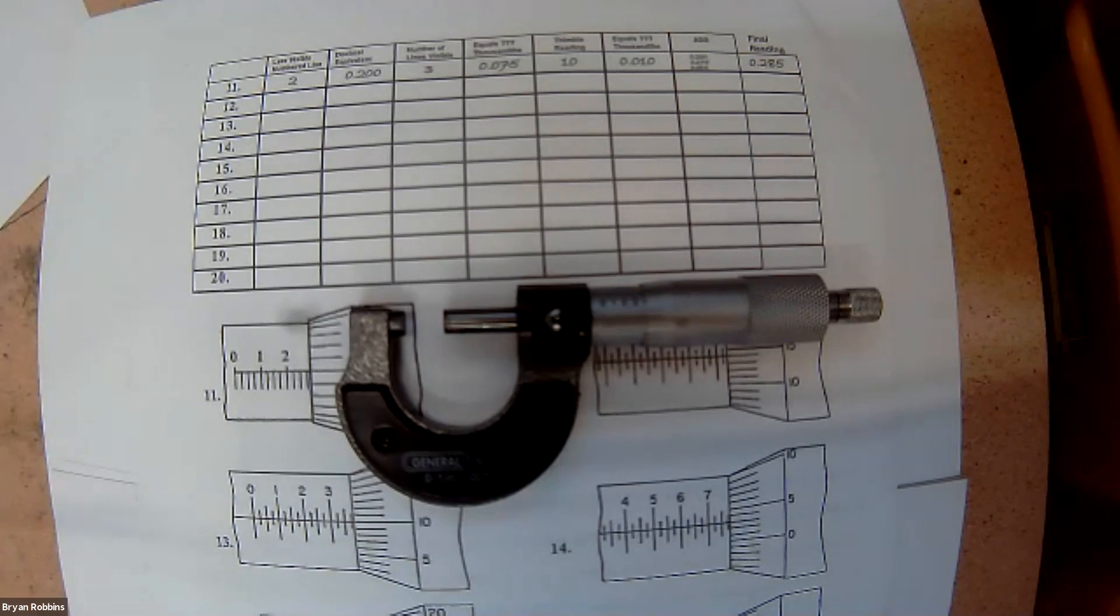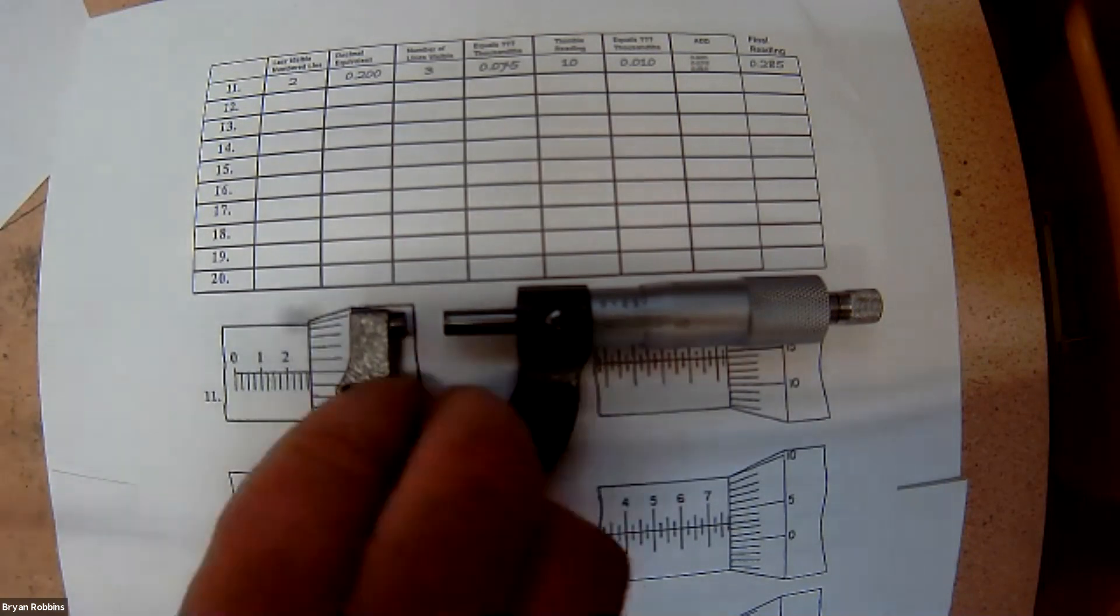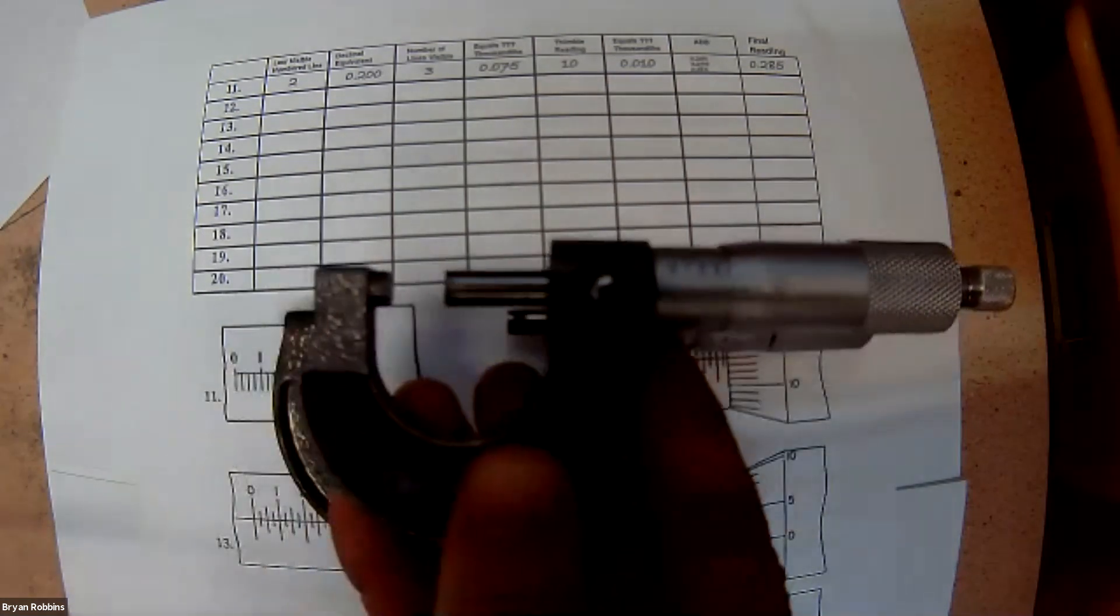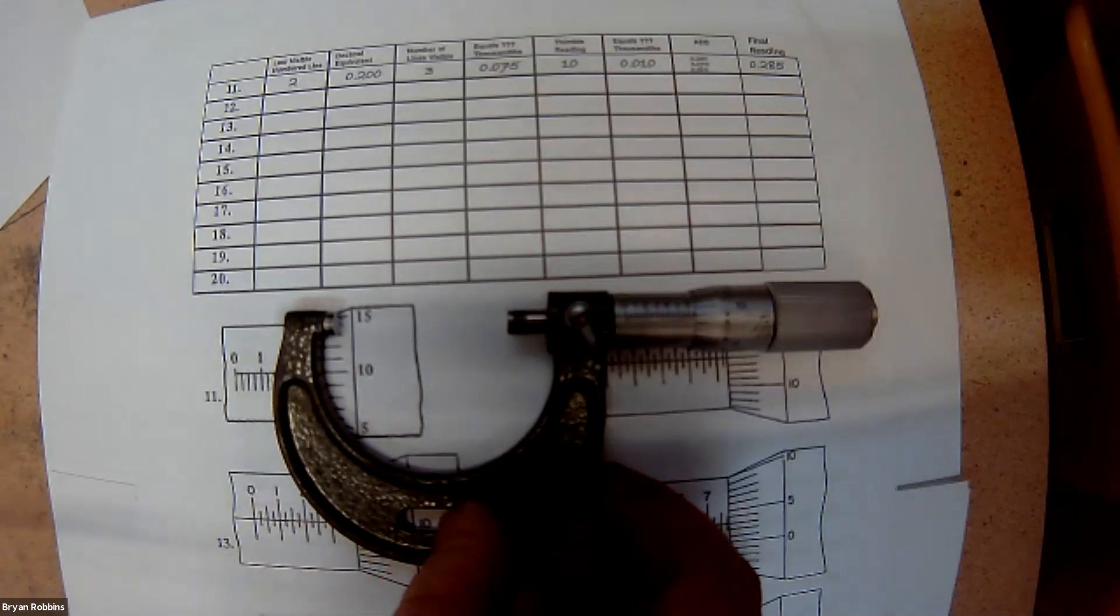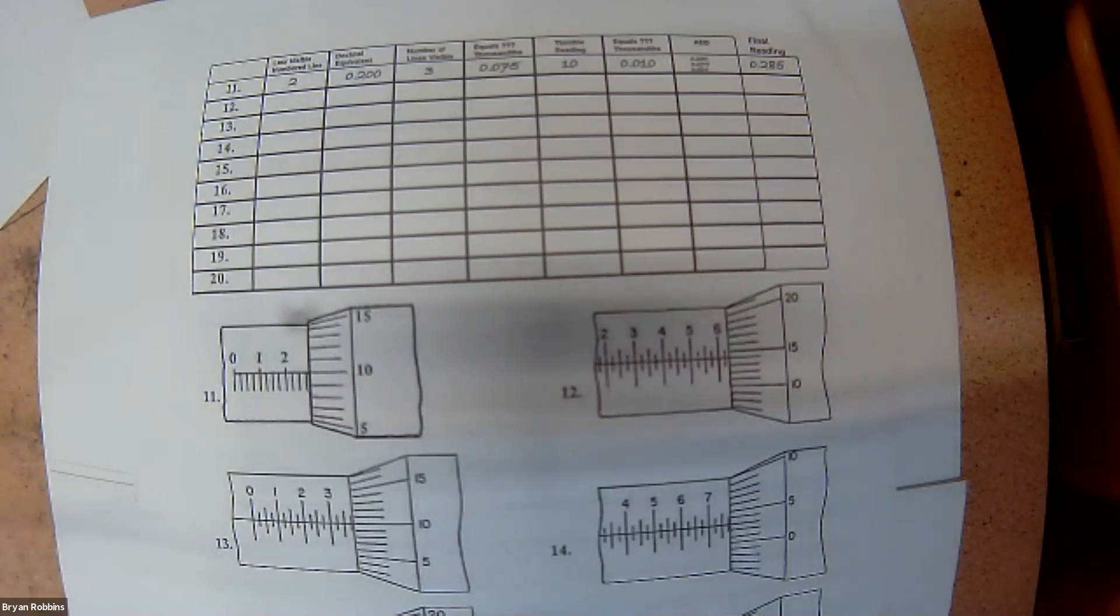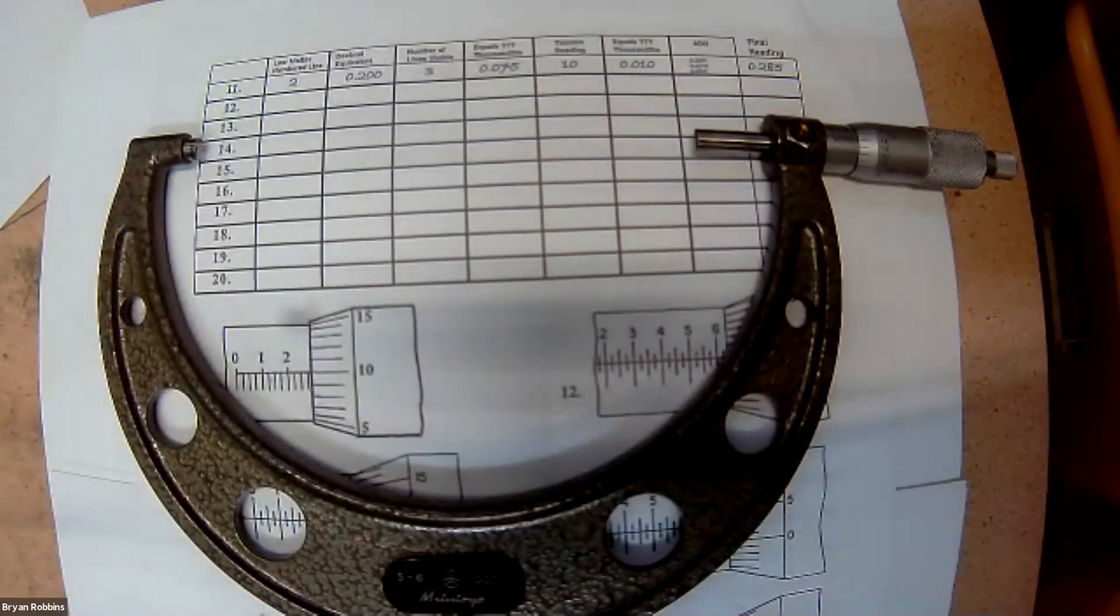We have an example of a micrometer here, and it's important to realize that each micrometer only measures one inch of distance. So we have a zero to one inch micrometer sitting on the paper right now. We could also go up to a one to two inch micrometer. Every measurement that this micrometer makes is going to start with a zero and a decimal point. Every one that this one makes starts with a one and a decimal point. And we have all the sizes here going right up to a five to six inch micrometer, which will have every measurement starting with a five and a decimal point.